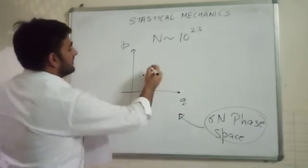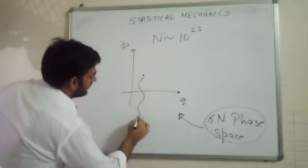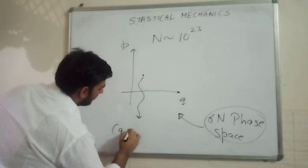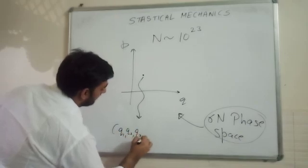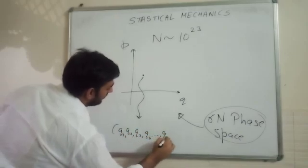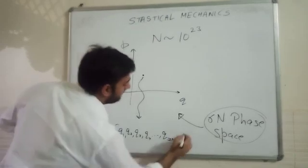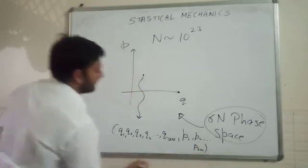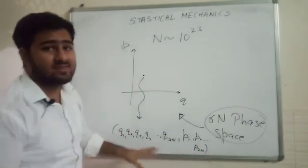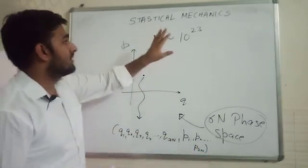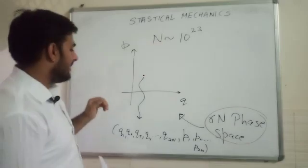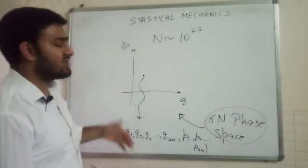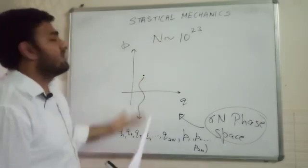Because the coordinate of this will be Q1, Q2, Q3, Q4 up to Q3N, P1, P2 up to P3N. So these are 6N coordinates for N particles. Each coordinate will describe the state of, for example, an ideal gas.